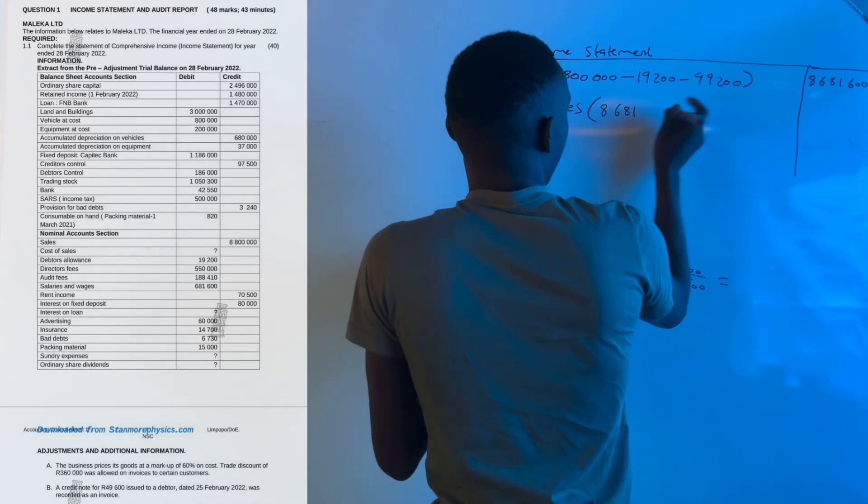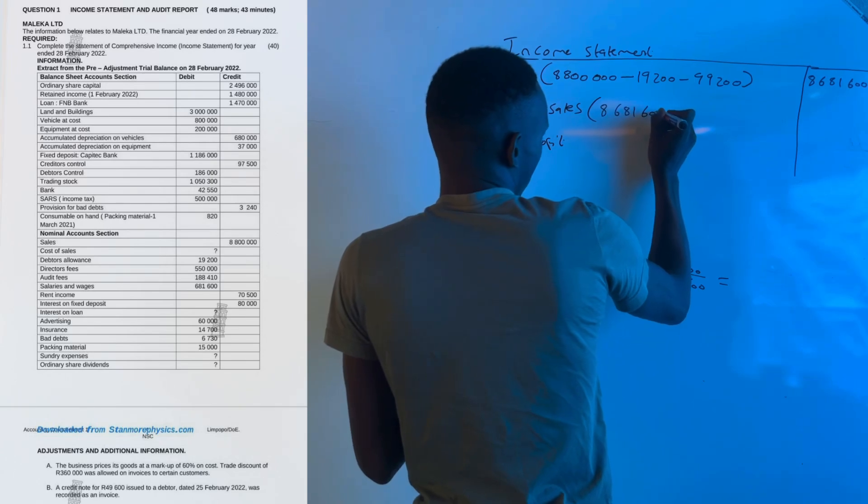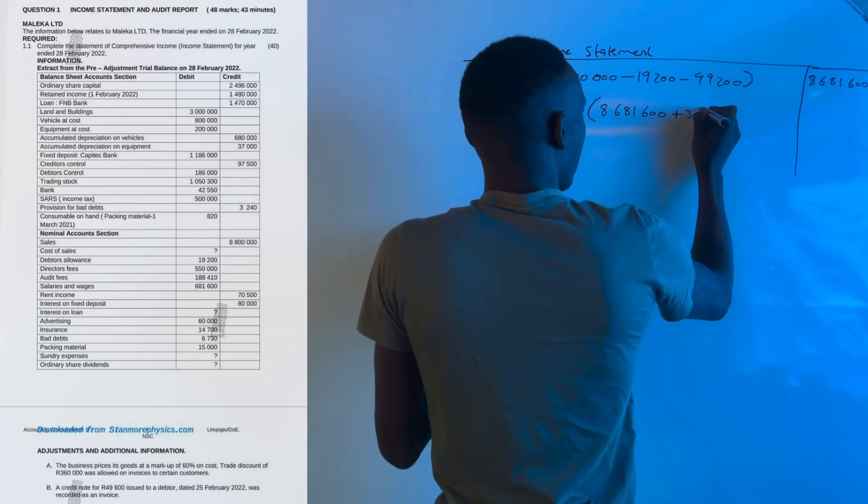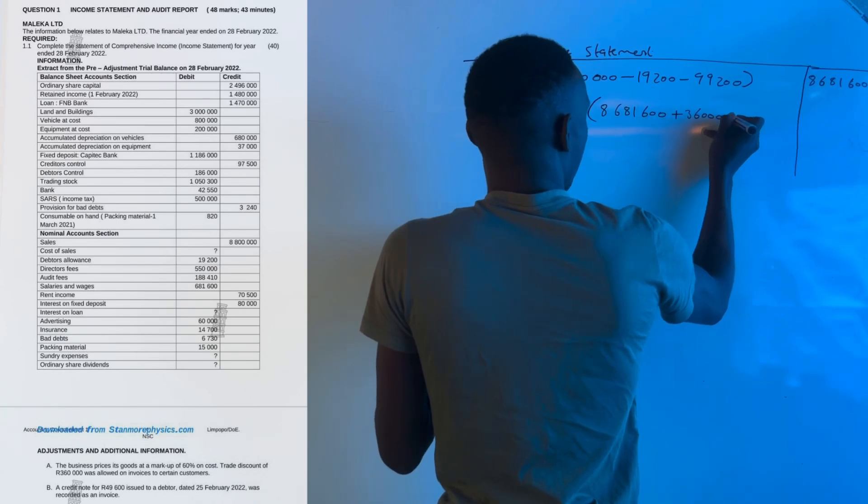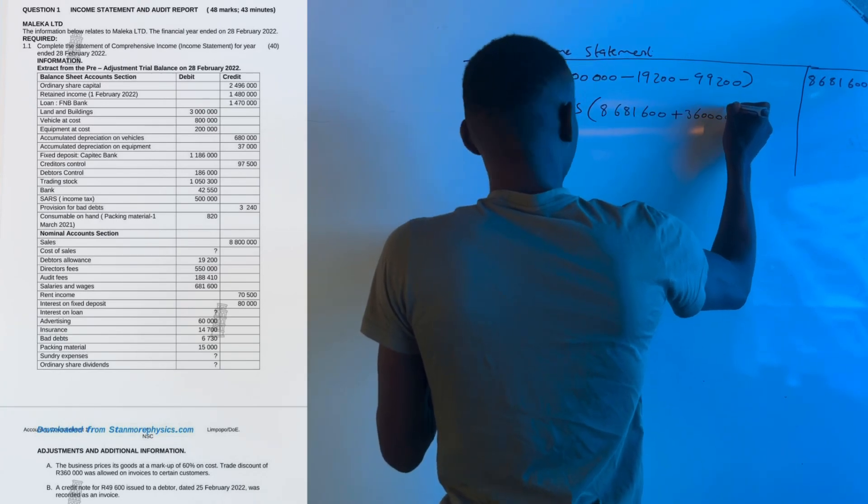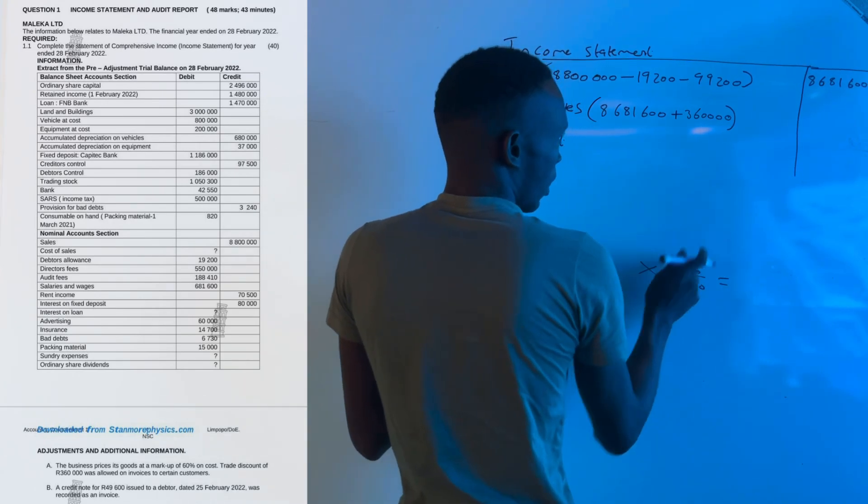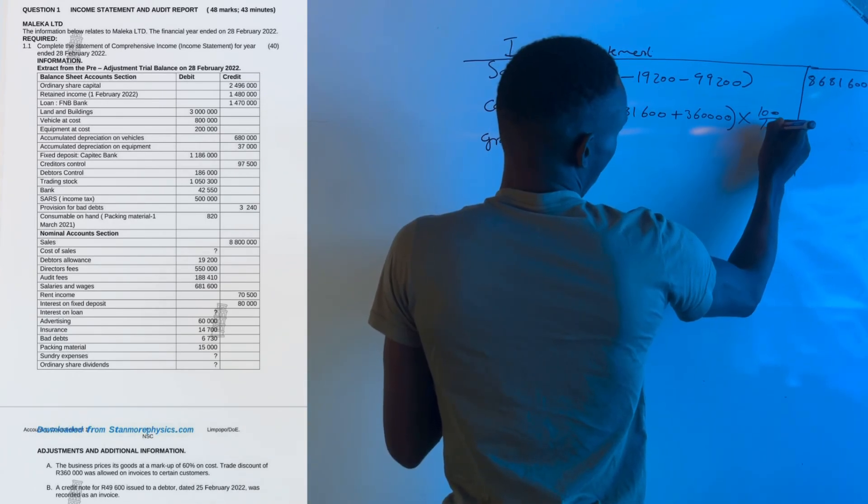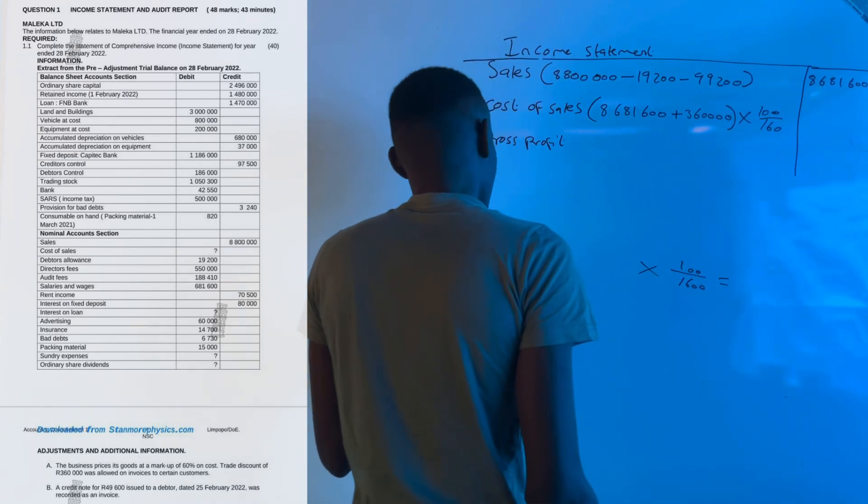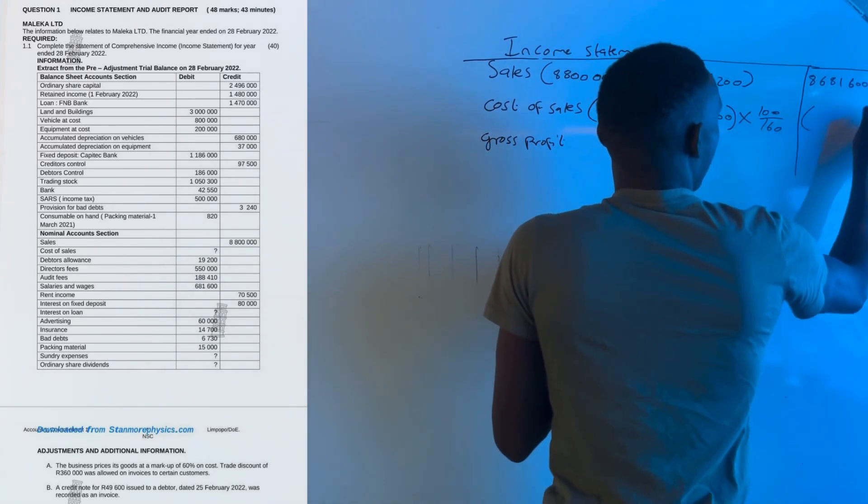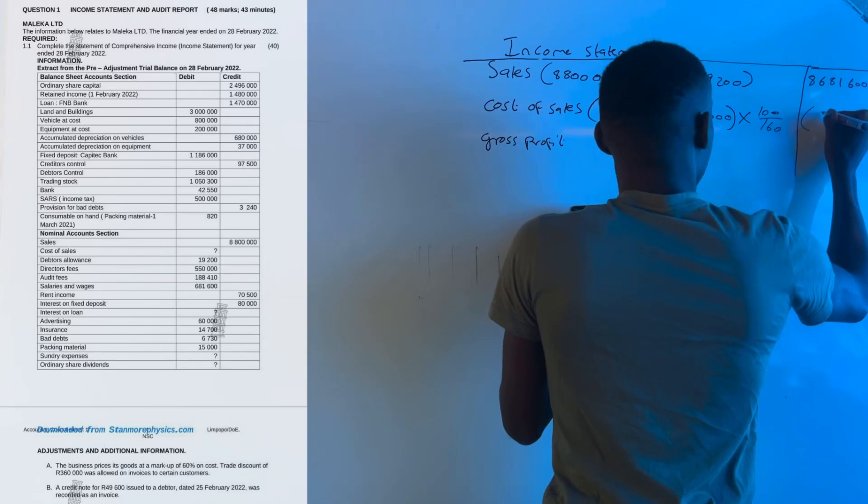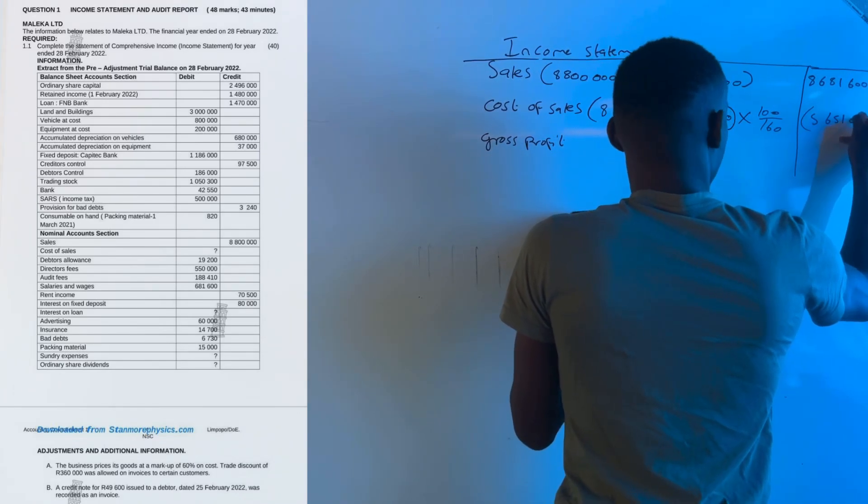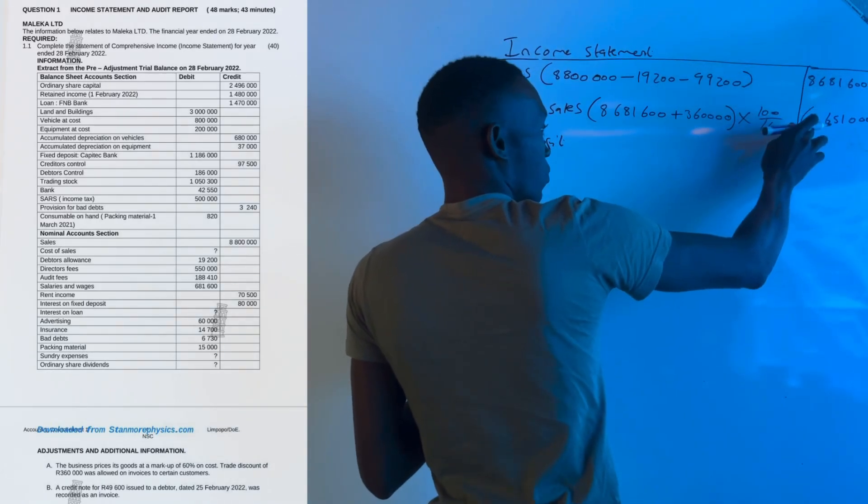We're going to say 8 million 681,000 of sales and add back 360 because we didn't receive it, it costed us. Then we apply the formula of 100 over 160. That gives us 5 million 651,000. Sales minus cost of sales gives us a gross profit of 3 million 30,600.